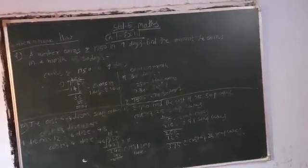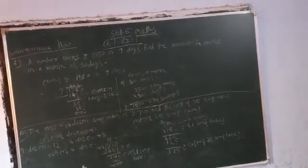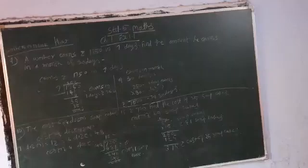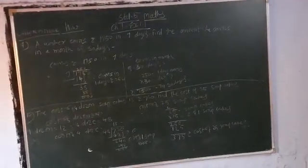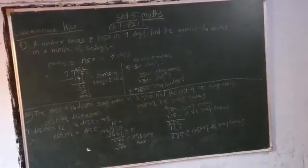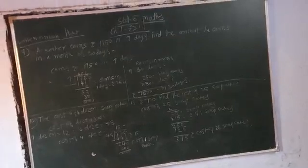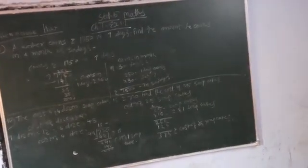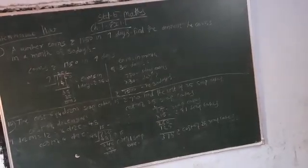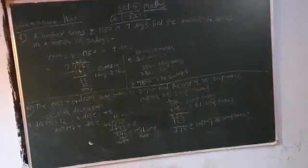Next problem: The cost of 4 dozen soaps is 720 rupees. Find the cost of 25 soaps. So, 4 dozen soaps means 4 times 12, which equals 48 soaps.